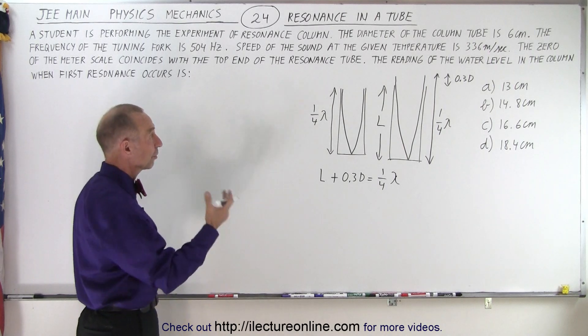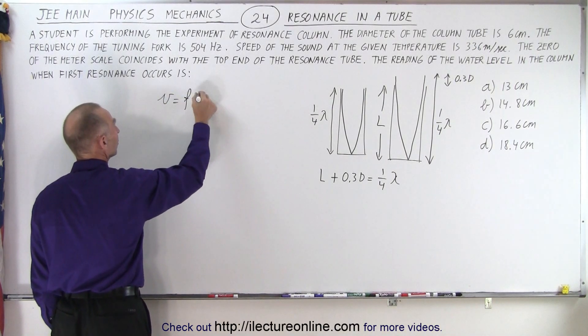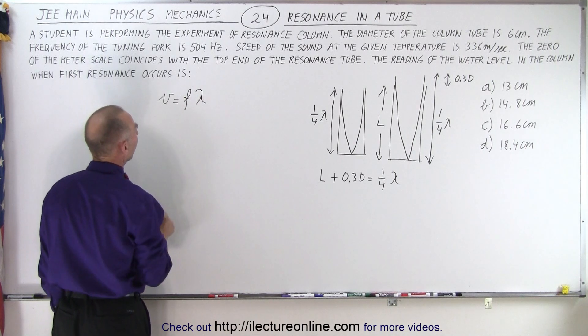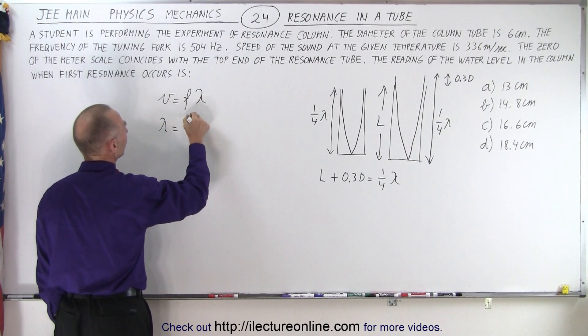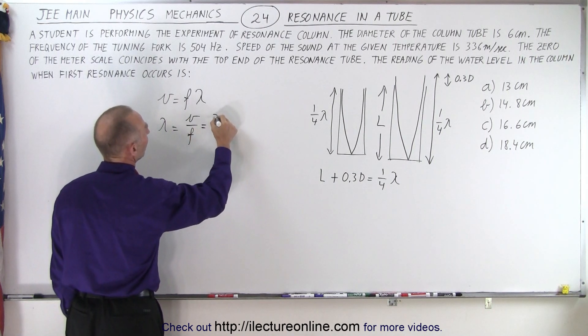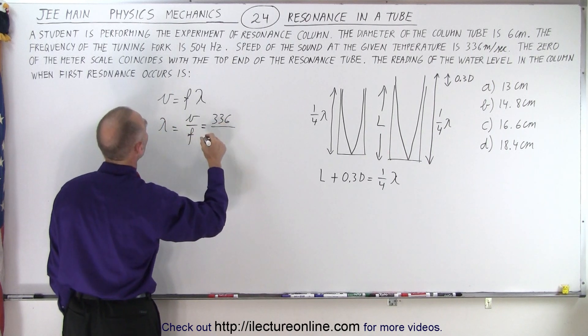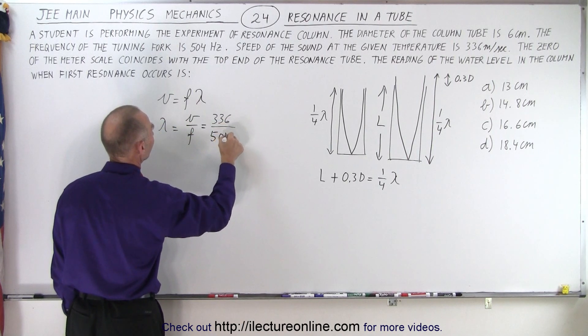Now what's the length of the wave here in this particular case? Well, with waves we know that the velocity equals the frequency times the wavelength. And so therefore the wavelength equals the velocity divided by the frequency. The velocity of sound in air is 336 meters per second, and we divide it by the frequency which is 504.